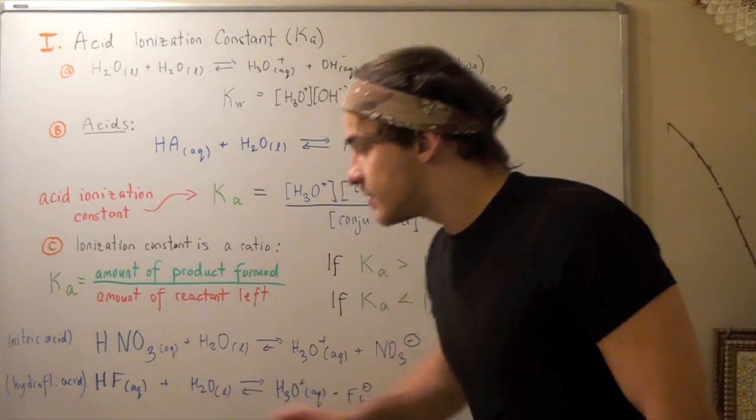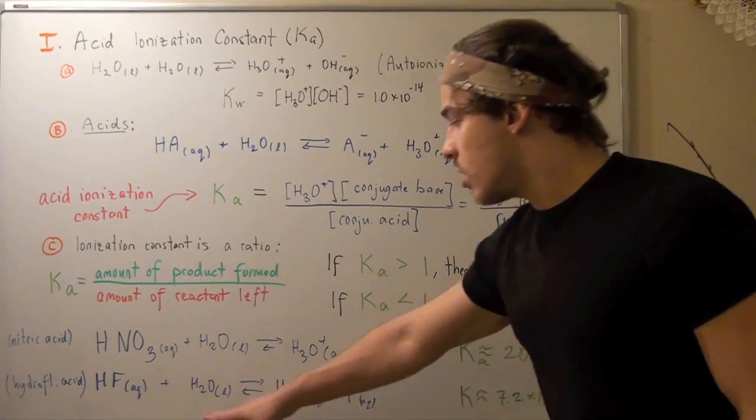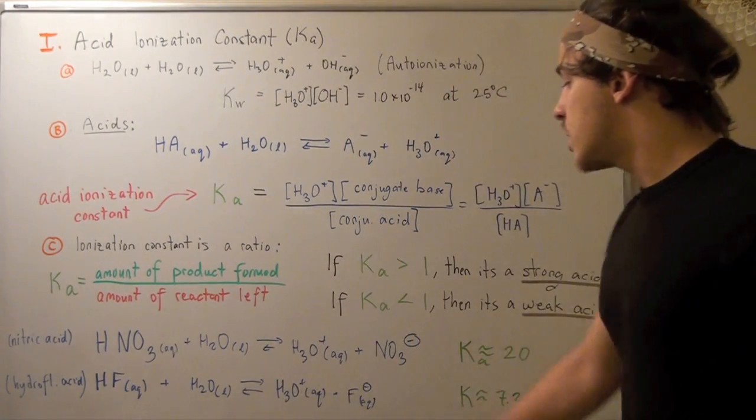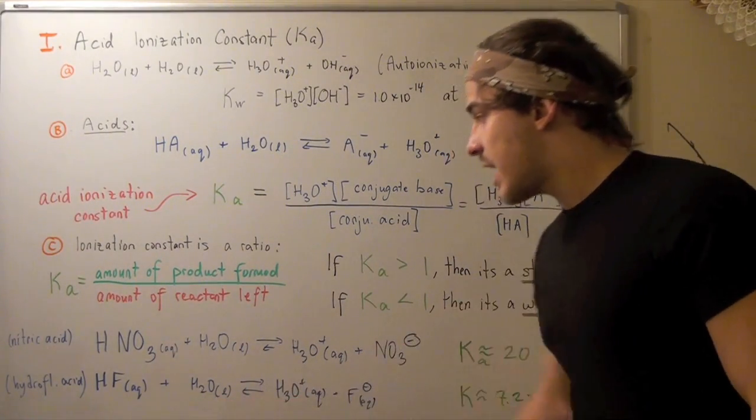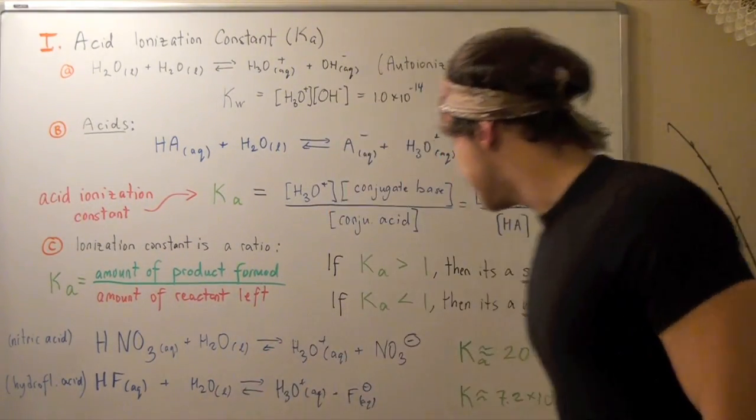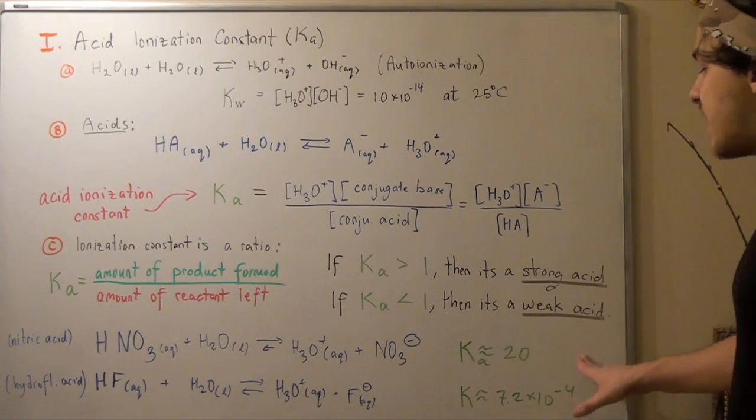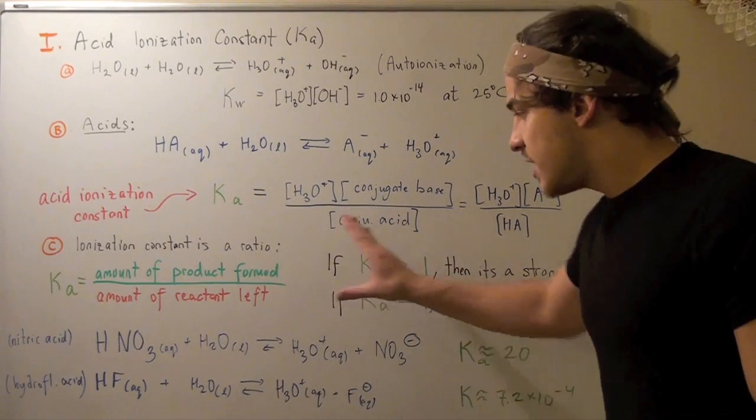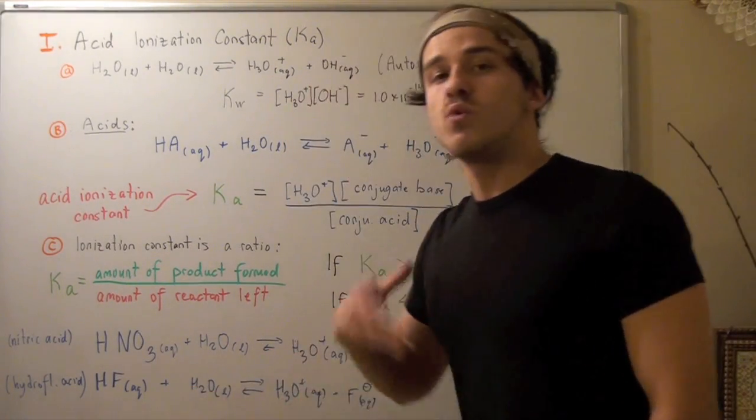Now let's look at hydrofluoric acid. Hydrofluoric acid in aqueous state reacts with water to produce hydronium plus the F⁻ ion. The Ka for this acid is very low, 7.2 × 10⁻⁴, and that means it's a bad acid. In fact, it is a weak acid.